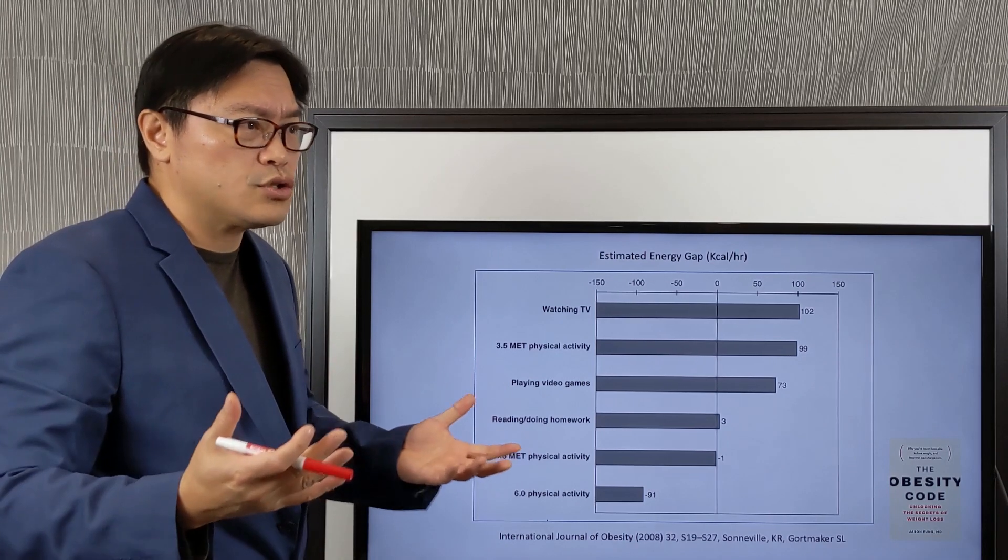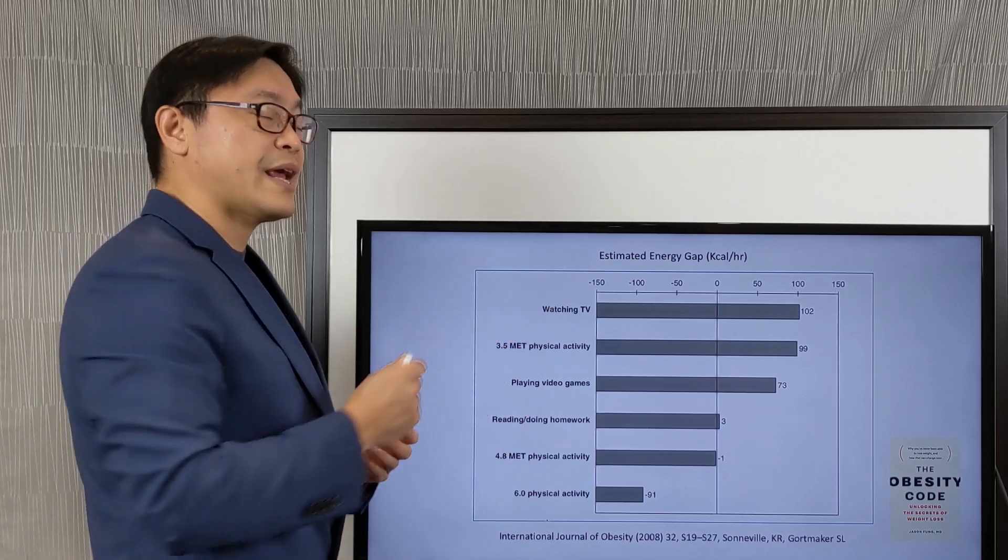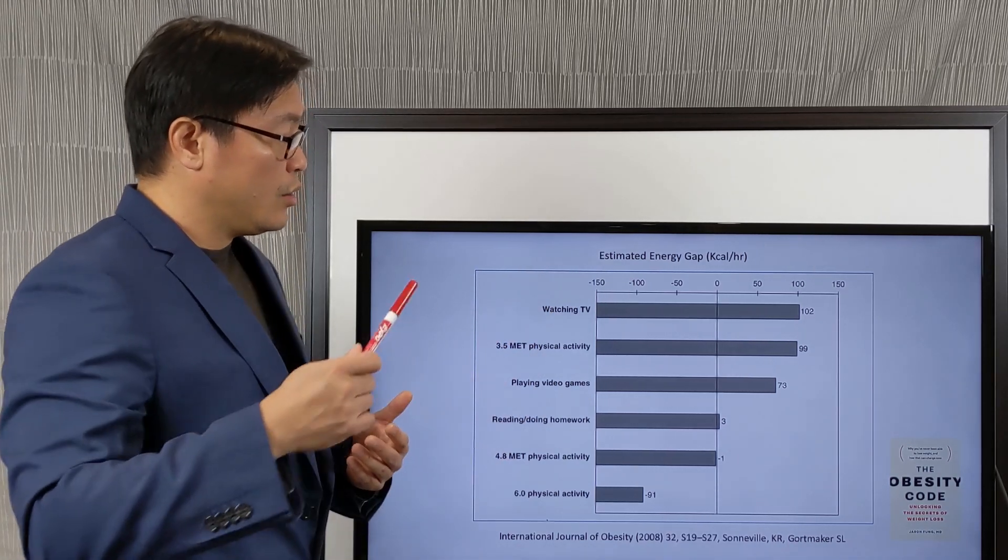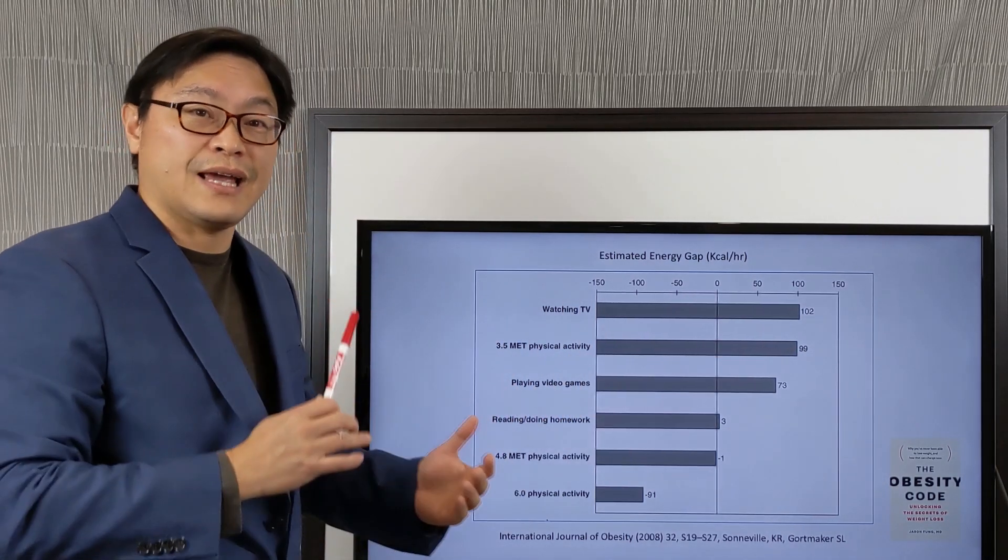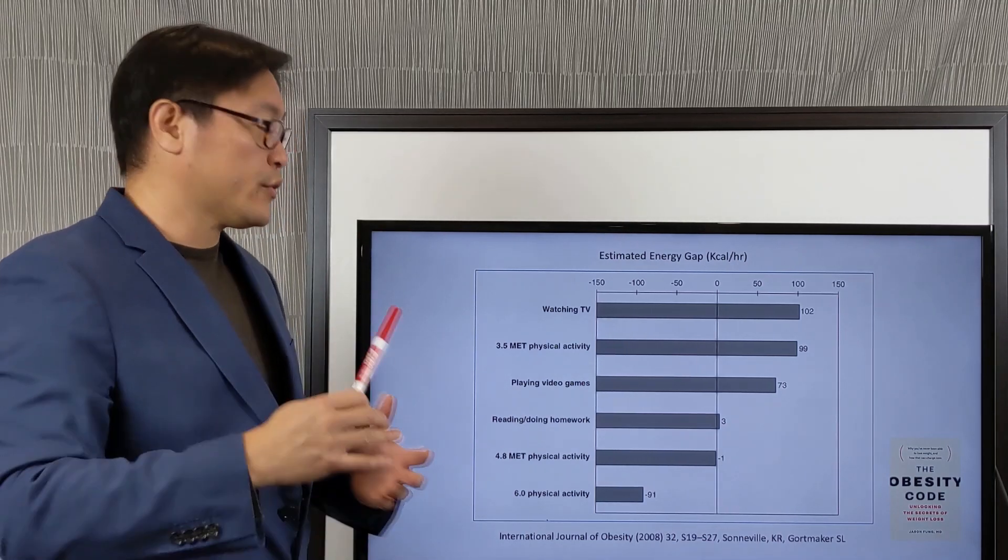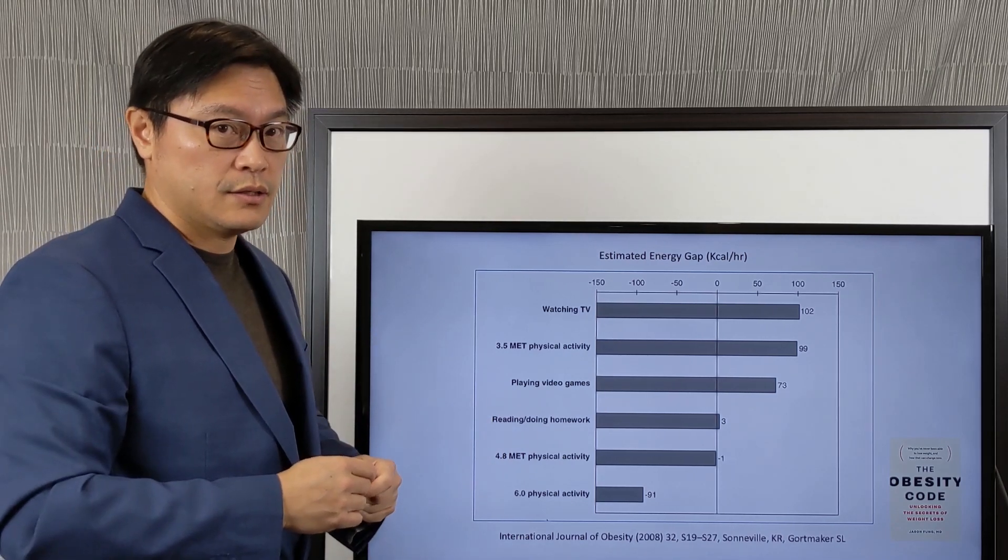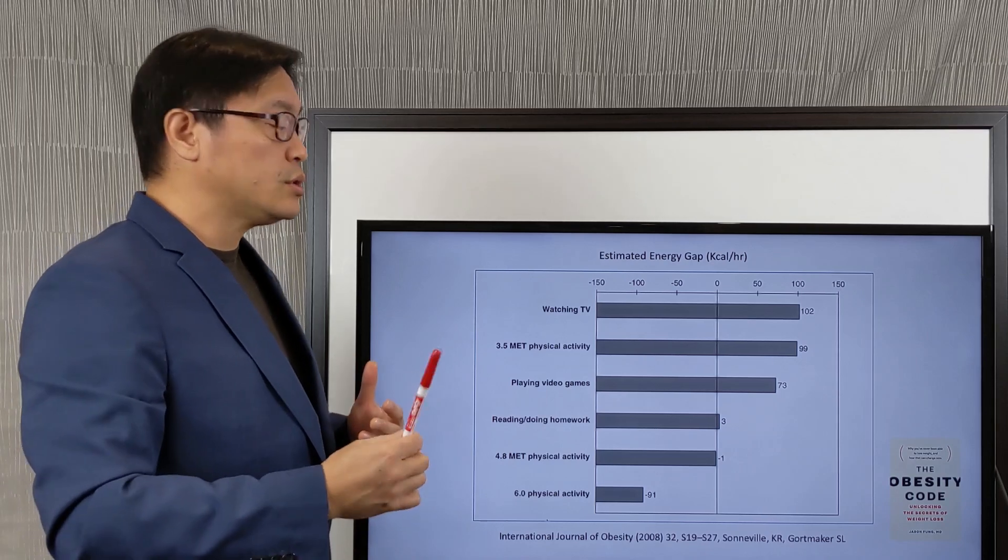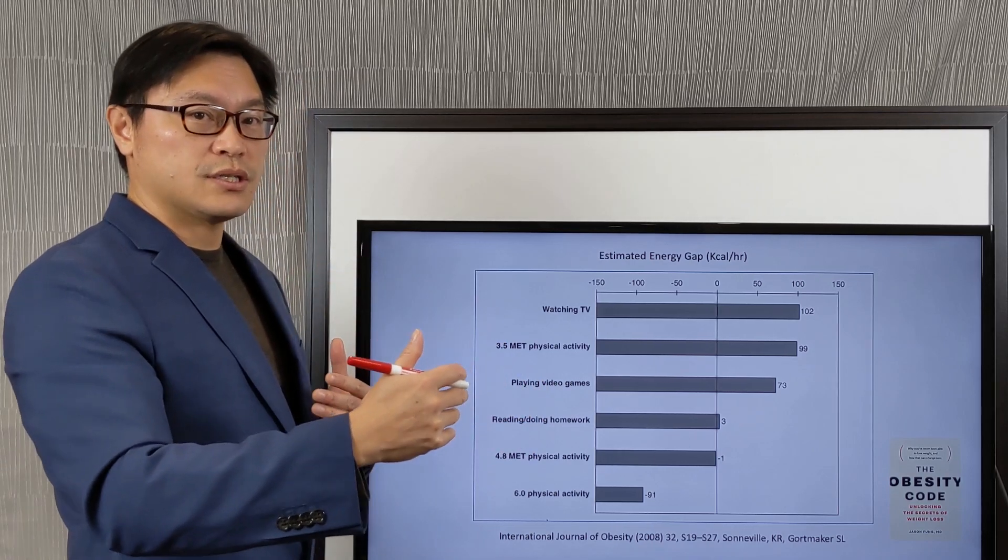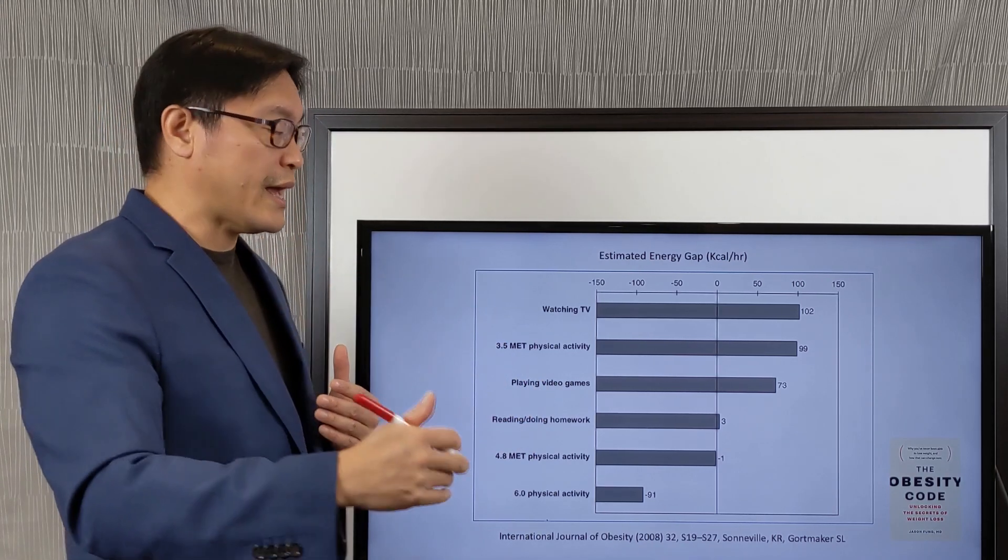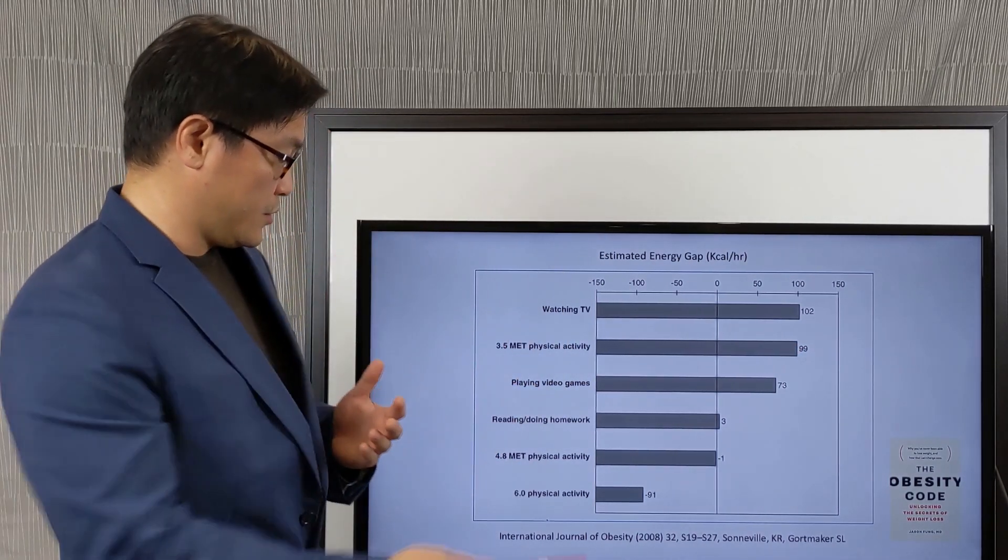But what you'll notice is that moderate physical activity actually shows almost the same effect. If you're doing some moderate activity, so this is 3.5 METs or metabolic equivalent, so this is the equivalent of like a light jog or something like that, what's going to happen is that you're going to stimulate your appetite so that in a free living situation, that increase in exercise actually tends to make you eat more such that you're actually in a net positive balance, almost the same as watching TV and not even as good as doing homework, for example.